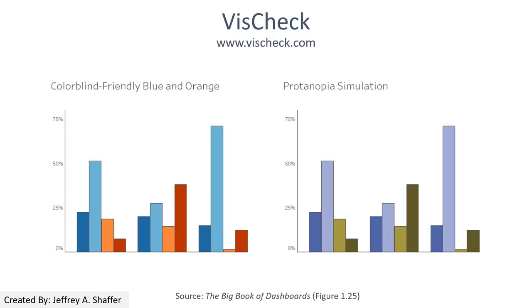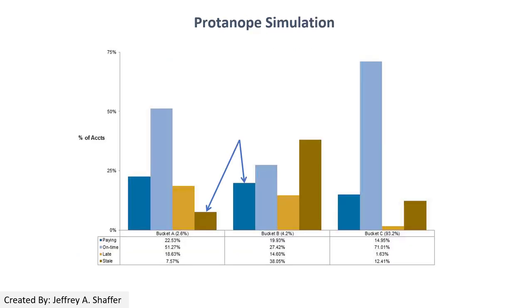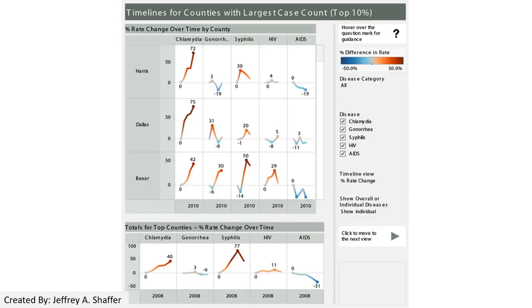A better choice is to use blue and orange, which is more colorblind friendly. Looking at orange and blue, even for people with CVD, the colors appear very different. You can see how easy they are to distinguish even under a color vision deficiency simulation — blue remains easy to see, though orange may appear as a shade of brown. This diverging color schema using blue and orange works very well and is colorblind friendly.